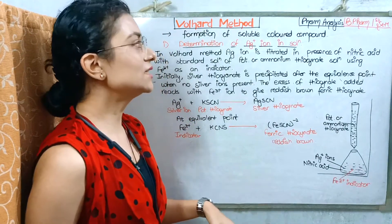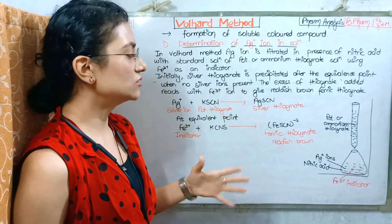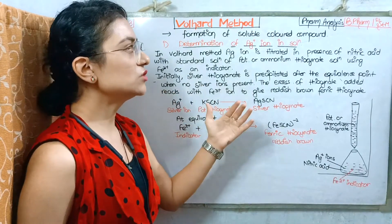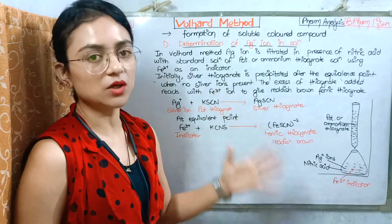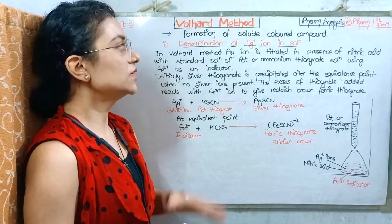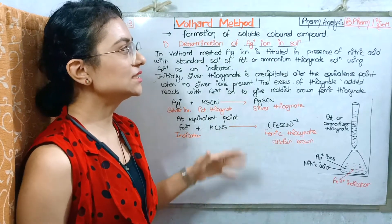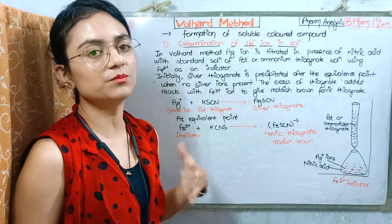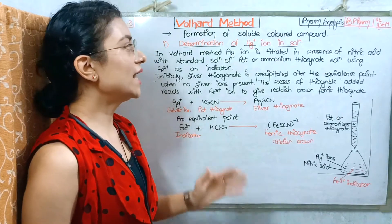What is happening in this method? This method forms a soluble colored compound. Now we will see the examples in which we form a soluble colored compound.